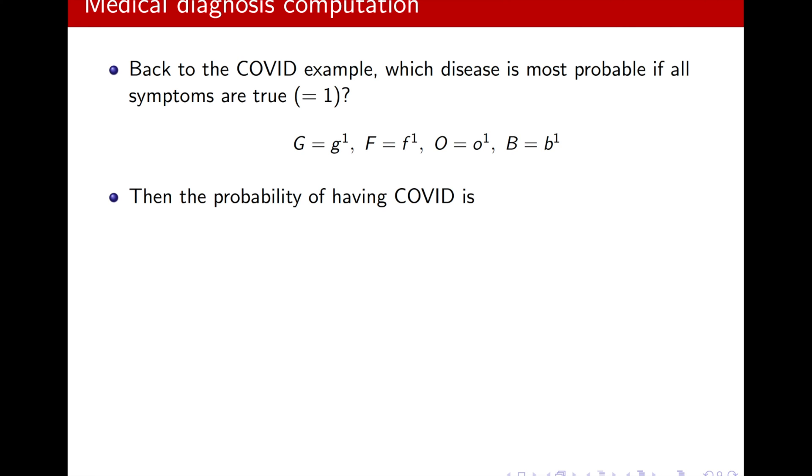Then, the probability of having COVID, for example, and then I can calculate the other two diseases, will be P of Y, the class variable, to be equal to COVID, given that all the other ones are true.